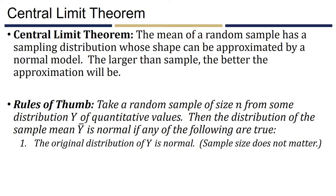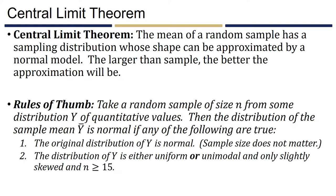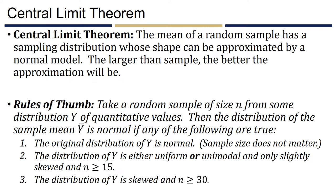The shape of the sampling distribution of ȳ is approximately normal if any one of three rules is true. First, if the original distribution of Y is normal, the sampling distribution is guaranteed to be normal regardless of sample size. Second, if the original population is uniform or unimodal and only slightly skewed, and the sample size is at least 15, the sampling distribution is approximately normal. Third, if the original population is severely skewed and you have a sample size of at least 30, the sampling distribution is approximately normal.